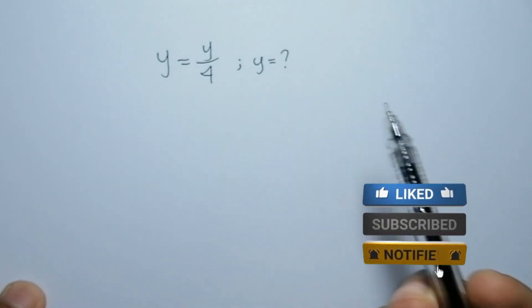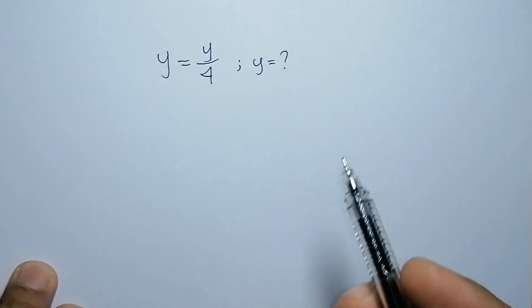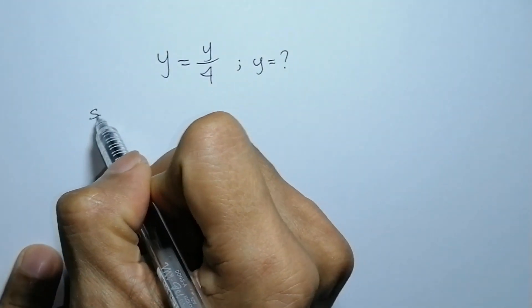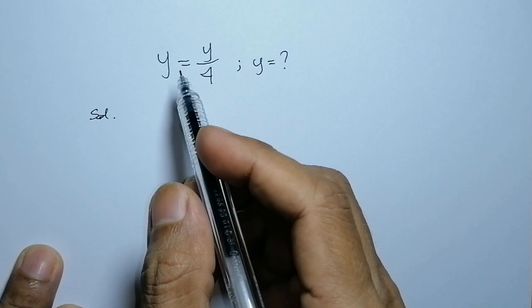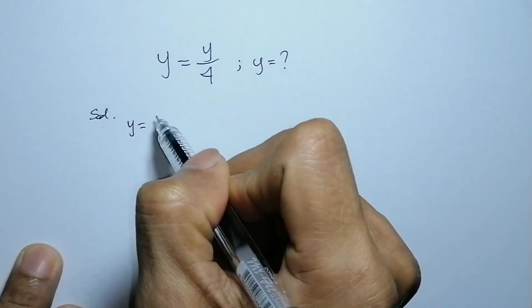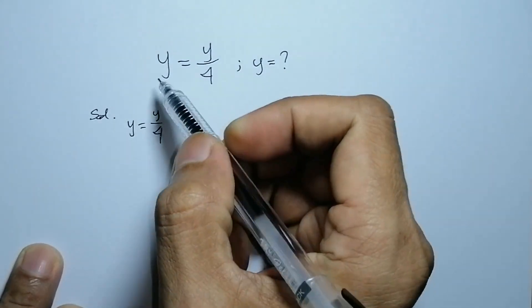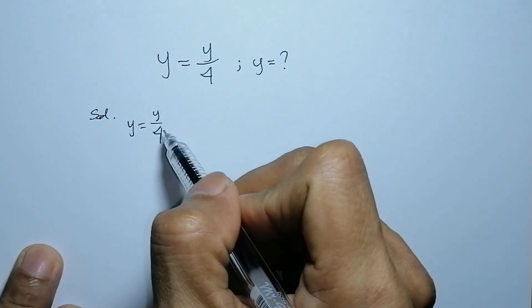In this problem, the first thing to do is we're going to write this as y equals y over 4. Then, we're going to equate this to 0.